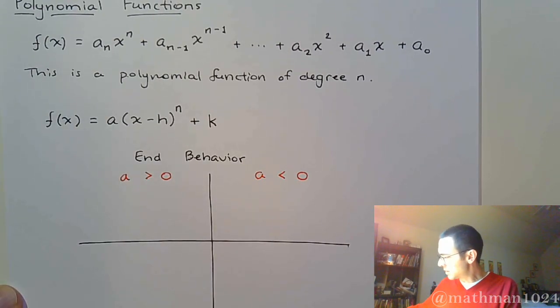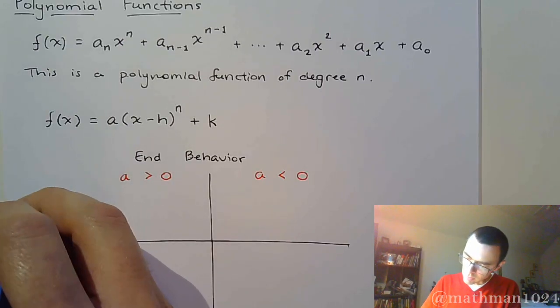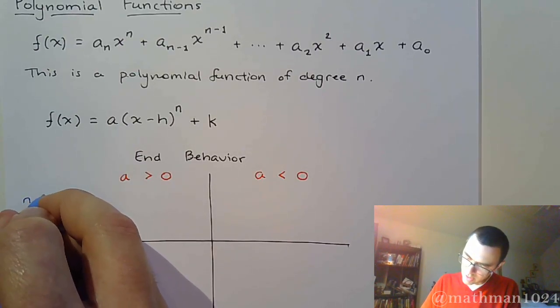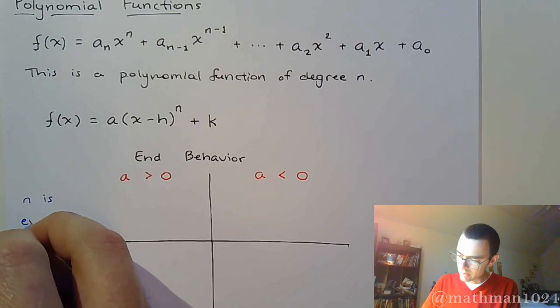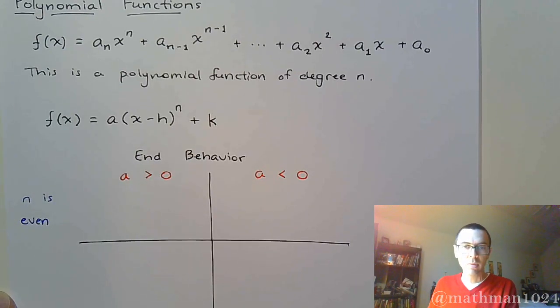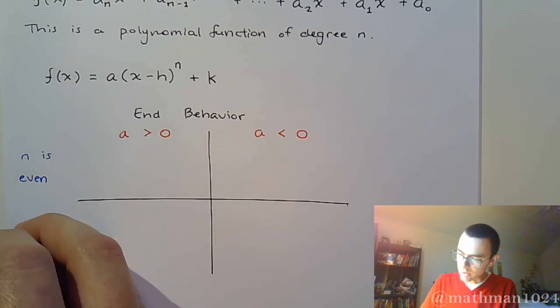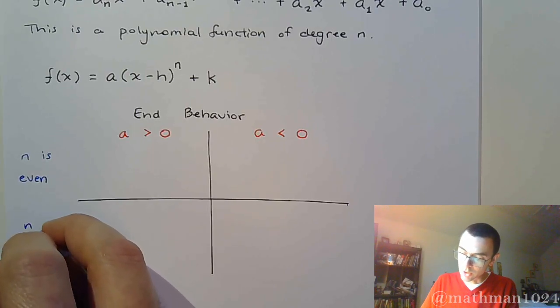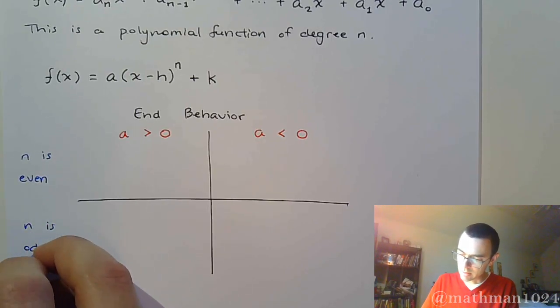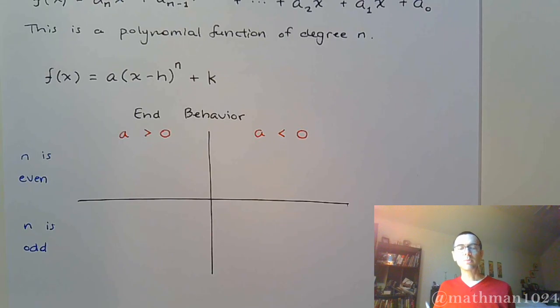And then on the side, what if n is even, versus what things look like when n, your degree, is an odd number.